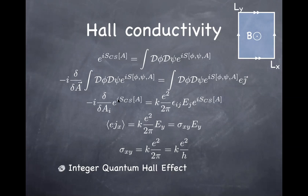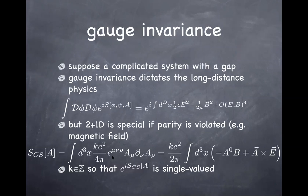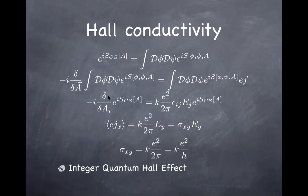On the other hand, taking the variation of the Chern-Simons term with respect to the vector potential, you find the electric field. The Chern-Simons term can be written explicitly: it contains the scalar potential times the magnetic field through the xy-plane, plus the exterior product of the vector potential and the electric field pointing in the z-direction — a scalar quantity in 2+1 dimensions. When you take the variation with respect to the vector potential, you pull out an electric field, but because it's a cross product, the directions are orthogonal. So varying the Chern-Simons term inserts the electric field in the perpendicular direction.